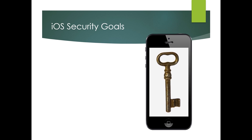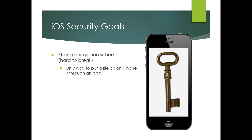Let's talk a little bit about iOS's security goals, because this will help us understand their encryption scheme. One of the things they wanted was a strong encryption scheme that would be hard to break. One important thing to know is the only way to put a file on an iPhone is through an app — this is not like a hard disk where you can put a file wherever you want. On any smartphone, all files go through apps. So it knows when an app is about to save a file, and it can encrypt it through that.